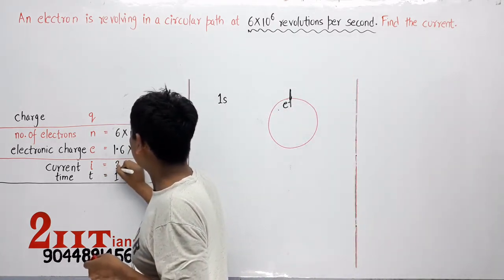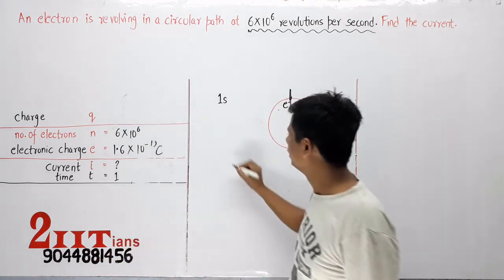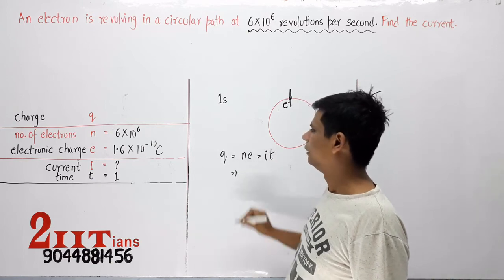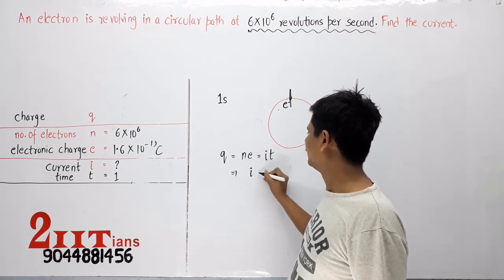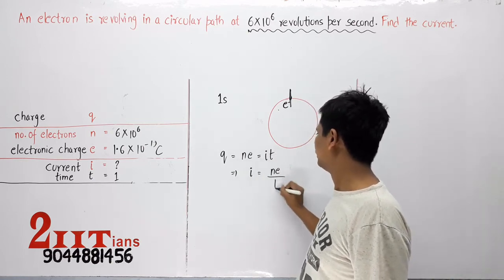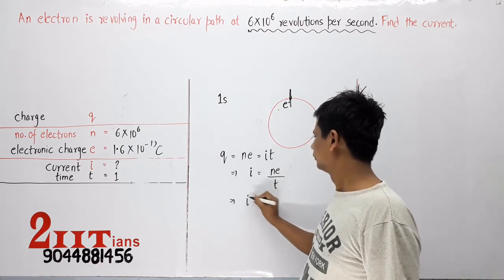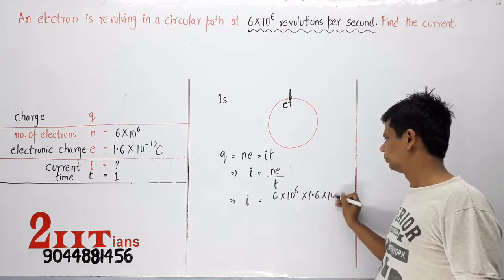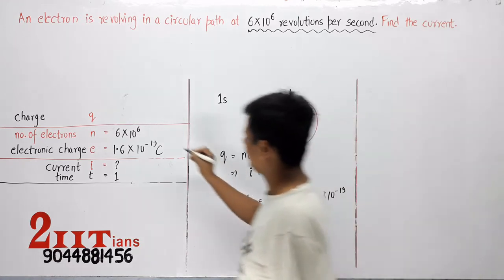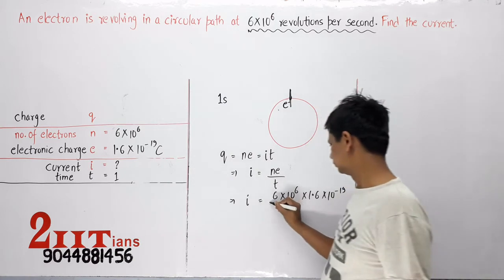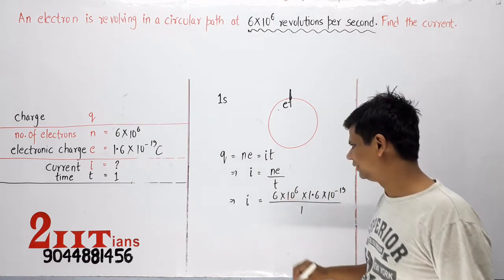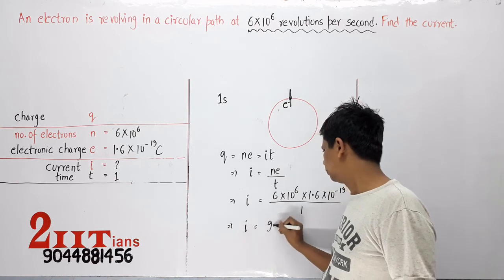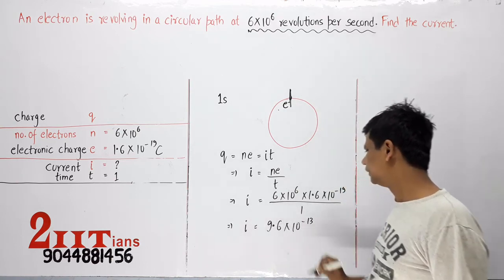Current का logic इसी तरह निकालेंगे। Time अपना one second हो गया। q = ne, और i = ne/t। तो i = (6 × 10⁶ × 1.6 × 10⁻¹⁹) / 1 second। Answer आएगा 9.6 × 10⁻¹³ Ampere।